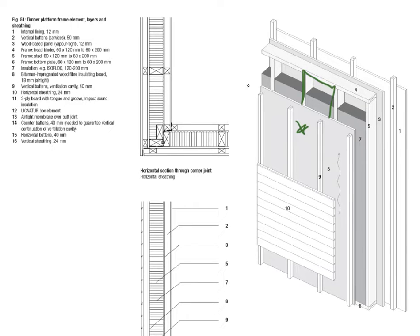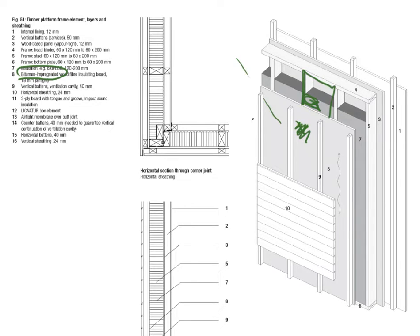The exterior panel — the one highlighted here, number 8 — has a bitumen impregnated wood fibre insulating board. The bitumen impregnation refers to a waterproofing of that material, meaning it is actually protecting the insulation and the construction sitting behind it from any type of water, especially rain, that might penetrate the wood cladding and get into the construction.